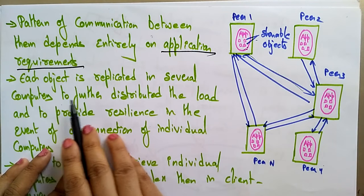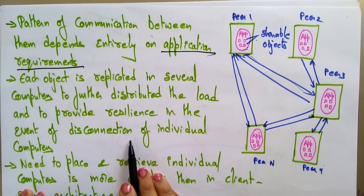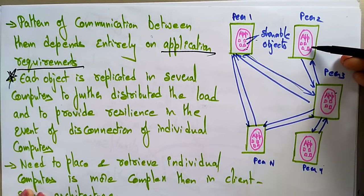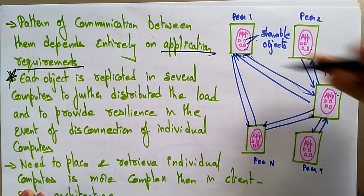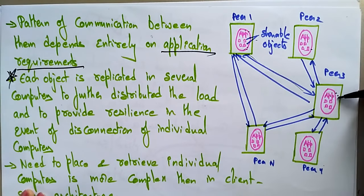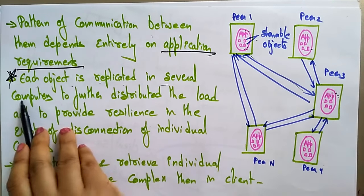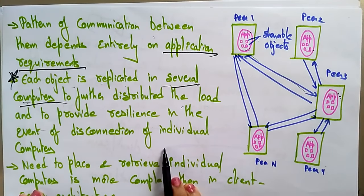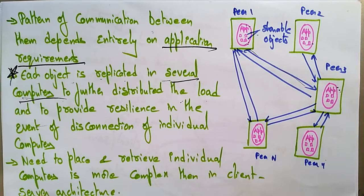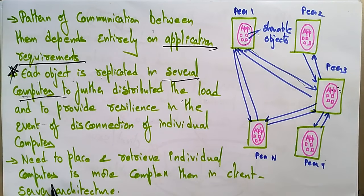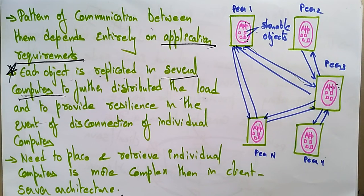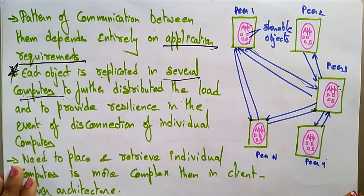Each object is replicated in several computers to further distribute the load and to provide resilience in the event of disconnection of individual computers. For example, if Peer 2 wants an object already available on Peer 3, it doesn't need to connect to Peer 1. This replication makes placement and retrieval more complex when compared to the client-server architecture. That is the peer-to-peer communication model.